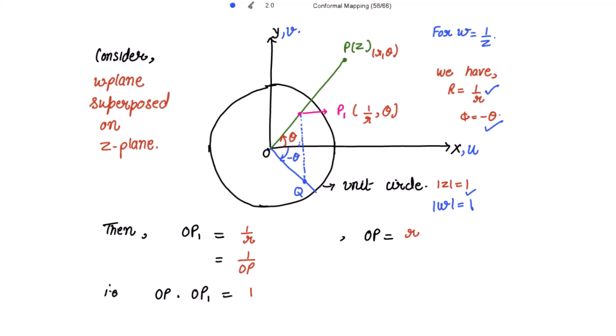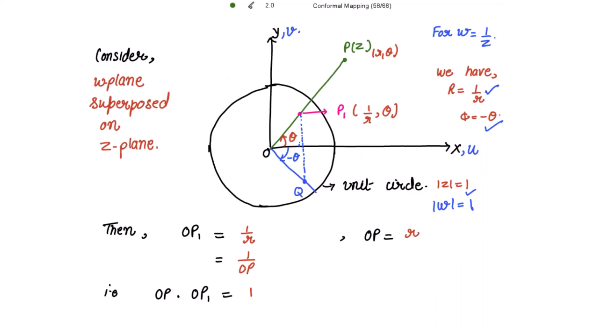Points exterior to |z| = 1 are mapped into the interior of |w| = 1, and vice versa. If the point z is at the origin, the radius r = 0, so R becomes infinity. Thus, the origin z = 0 is mapped to the point w = infinity, which is called the point at infinity.